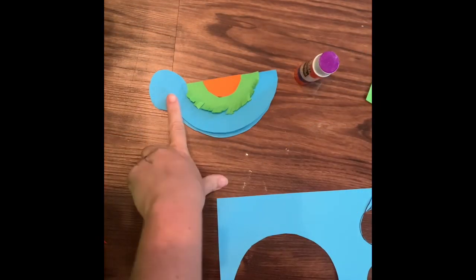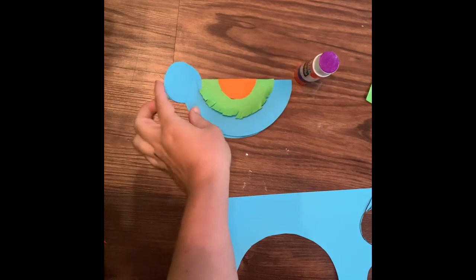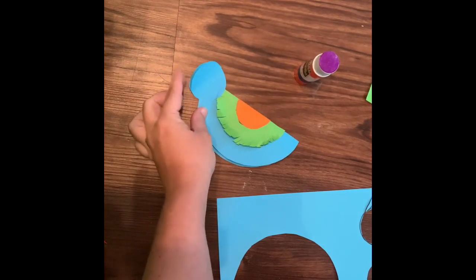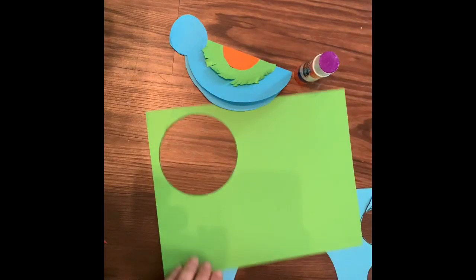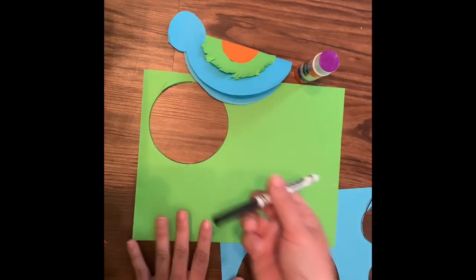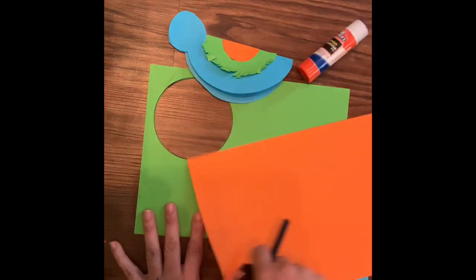Okay guys, so I've attached the two pieces of paper to the front to make the face or the head of the bird. I'm going to use the green paper to make an eye, and then I'm going to use the orange paper to make a beak.